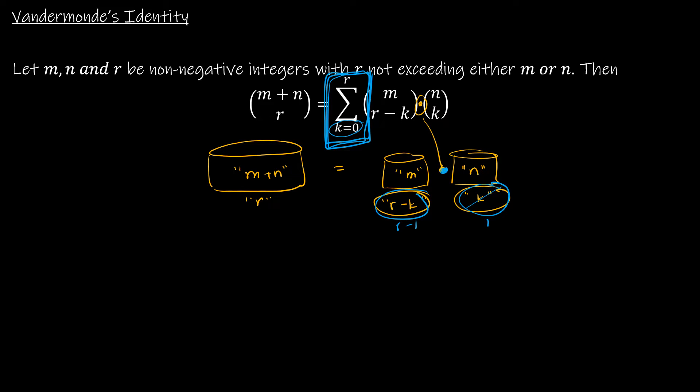So that is, again, not a combinatorial proof, not a mathematical proof, just a way to intuitively understand what Vandermonde's identity is saying.